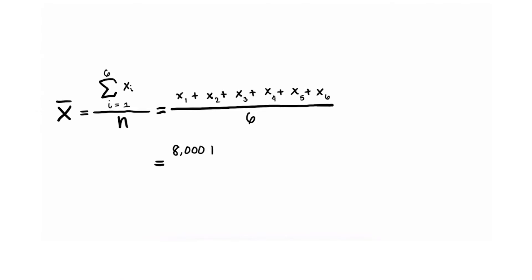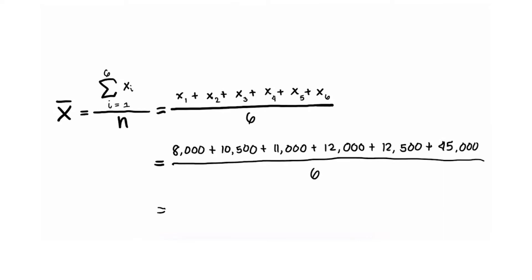Now let's have an example. Consider the number of handicrafts produced: 8,000, 10,500, 11,000, 12,000, 12,500, and 45,000. To find the mean: 8,000 + 10,500 + 11,000 + 12,000 + 12,500 + 45,000 divided by 6 equals 16,500. Therefore, the mean of handicrafts produced is 16,500. Because of the very high production of 45,000, the mean is considerably higher than the majority of values — the mean can be affected by extreme values.